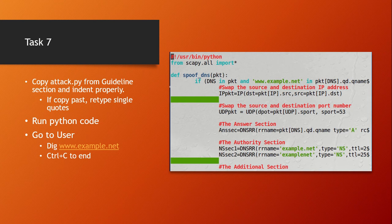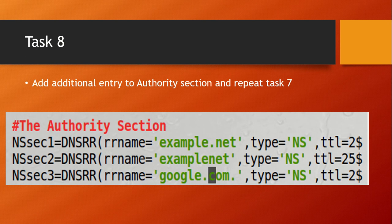For Task 8, go back to the Python code and add an additional entry for google.com. The lab specifies what's needed: google.com with TTL 259200, type NS, pointing to attacker32.com. The original code already provides two examples — just copy the pattern for the third entry. When you launch the attack on your local DNS, make sure you attack example.net, not google.com directly.